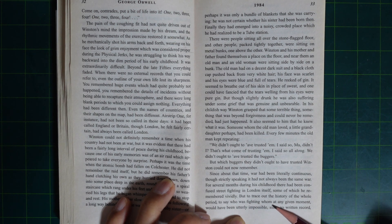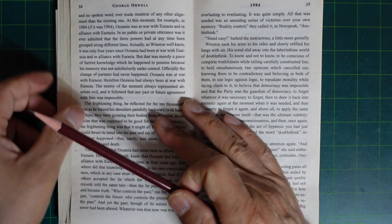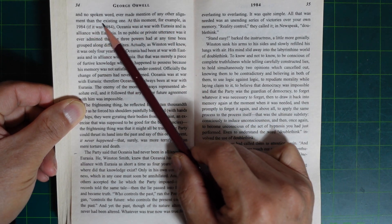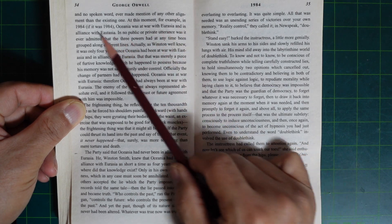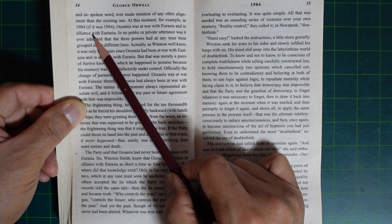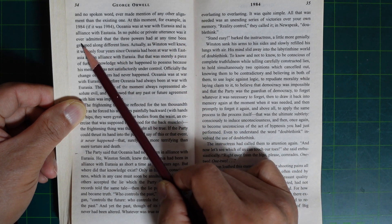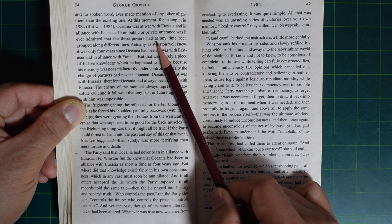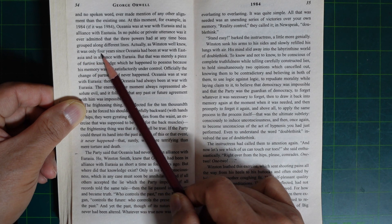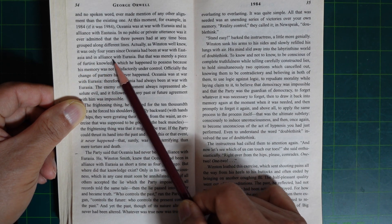But to trace out the history of the whole period, to say who was fighting whom at any given moment, would have been utterly impossible, since no written record and no spoken word ever made mention of any other alignment than the existing one. At this moment, for example, in 1984, if it was 1984, Oceania was at war with Eurasia and in alliance with Eastasia.